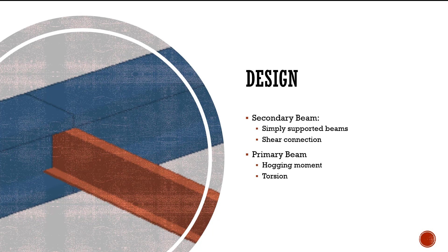For practical purposes, most secondary beams are connected to the main beam using shear connections, so only the load is transferred to the main beam as a point load. That's why secondary beams can be designed as simply supported beams for major axis bending and designed for shear.